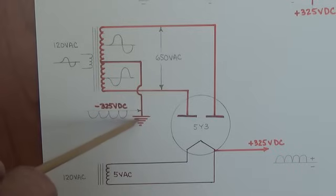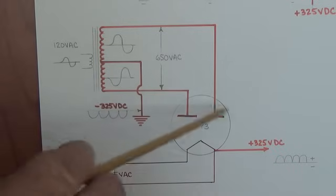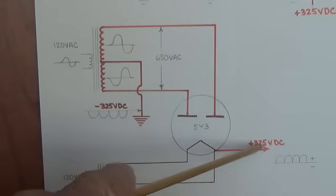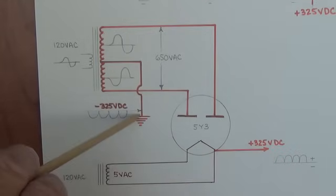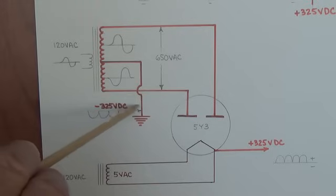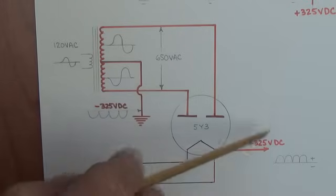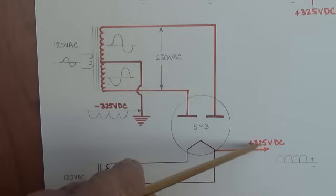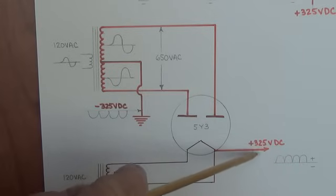We've reached the point where we have what amounts to is a direct current battery with a negative terminal and a positive terminal. We see that we, just like in a car, we connect the negative terminal to ground, but the positive terminal, that's something else. So you're going to have to watch part two to see what we do with this positive 325 volts of direct current.